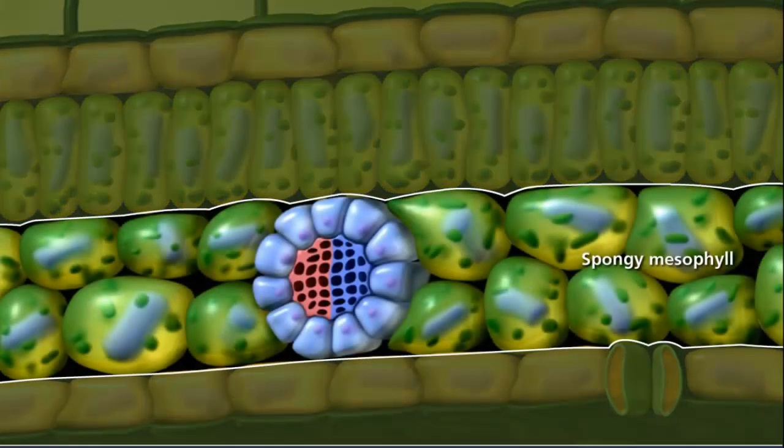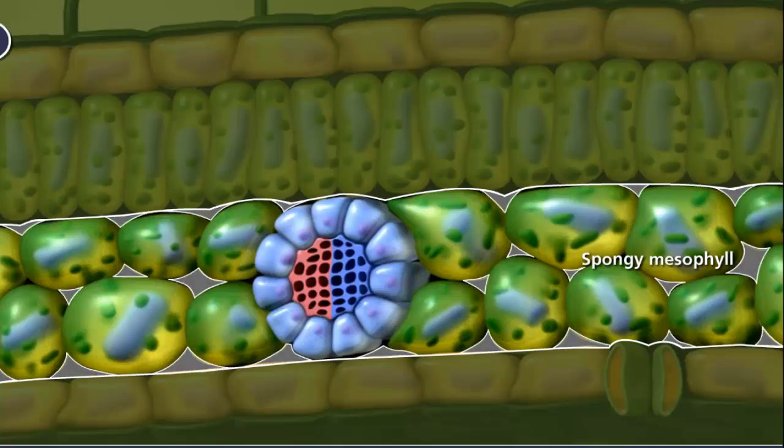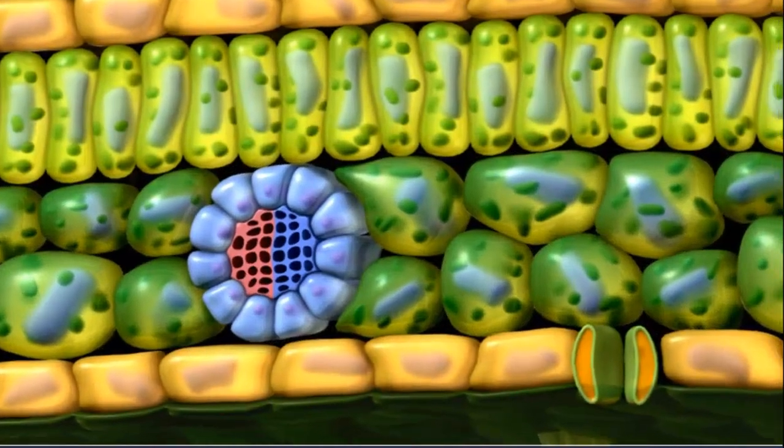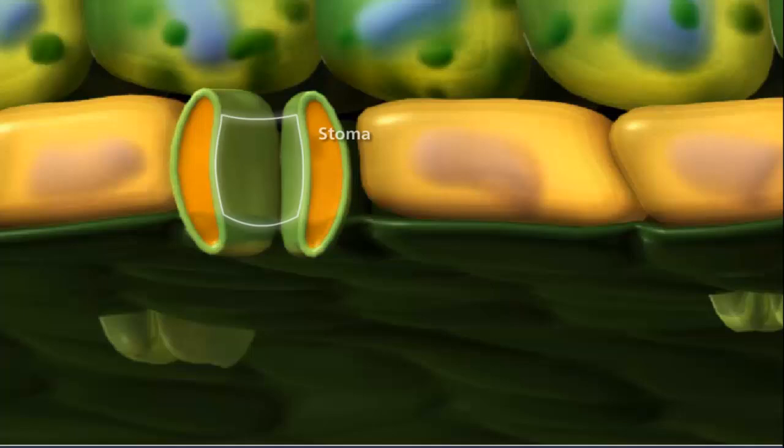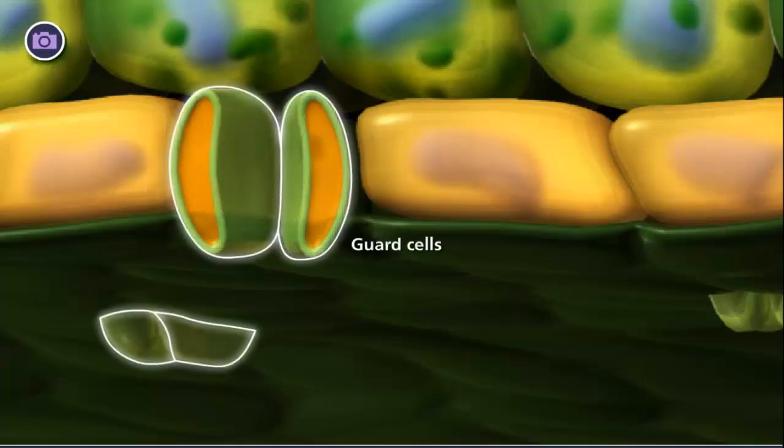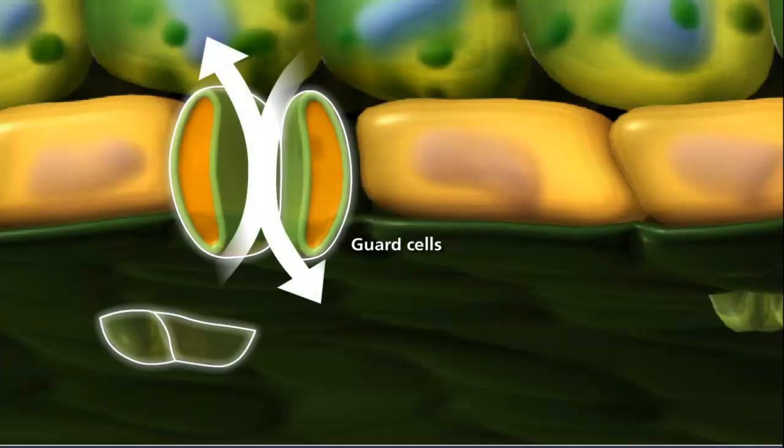The spongy mesophyll layer contains a looser arrangement of cells, where spaces between cells aid in gas exchange and the passage of water vapor from the leaves. Throughout the lower epidermal tissue are stomata, which are microscopic openings flanked by guard cells. Gases pass into and out of the leaf through these openings, as well as water vapor evaporating from the leaf, a process known as transpiration.